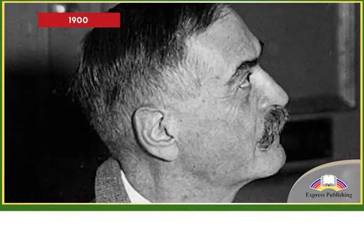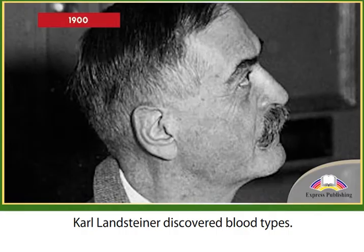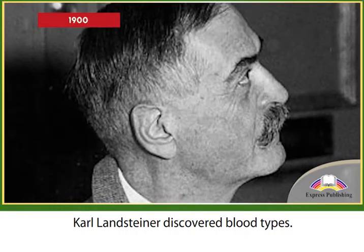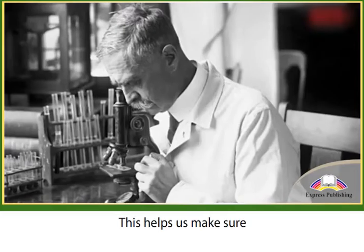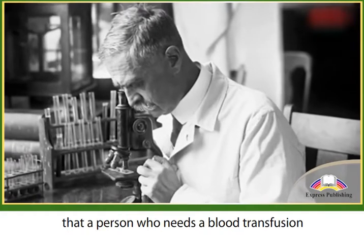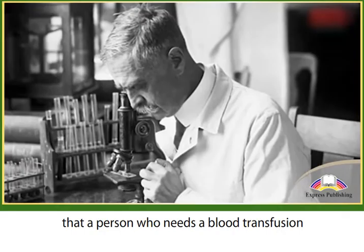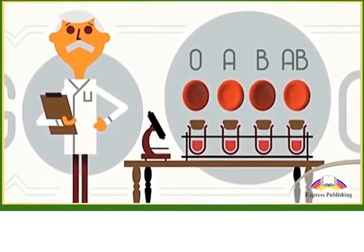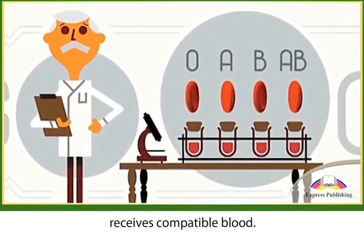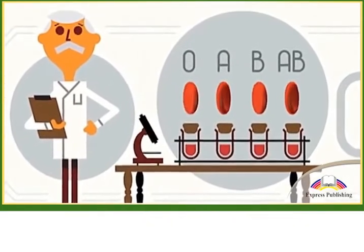1900: Carl Landsteiner discovered blood types. This helps us make sure that a person who needs a blood transfusion receives compatible blood.